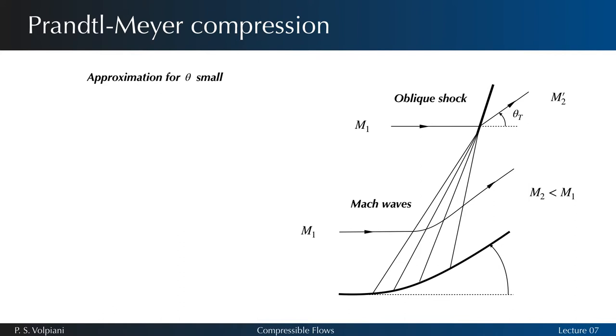The final result is illustrated in this image. As the turn progresses, the Mach number is decreasing and thus the Mach waves are at ever-increasing angles. The Mach waves coalesce to form an oblique shock inclined at the proper angle, corresponding to the initial Mach number and the overall deflection angle, theta t.